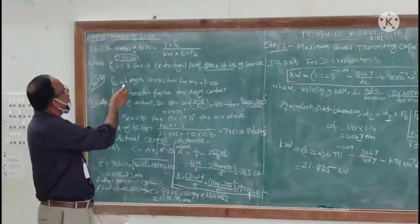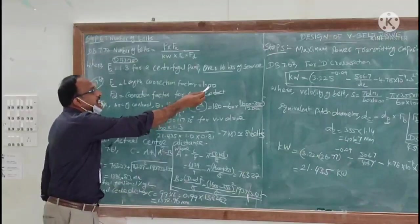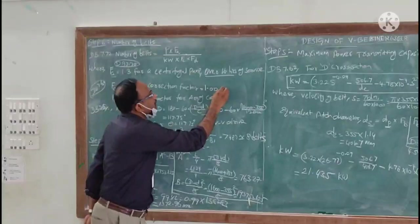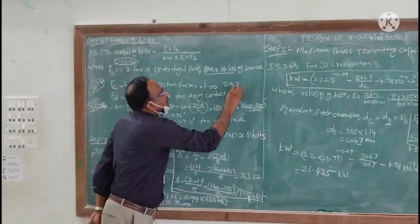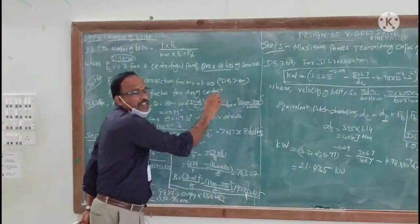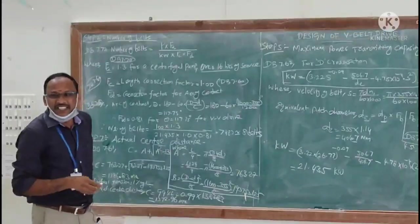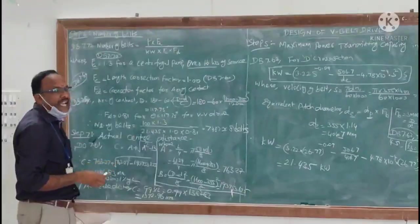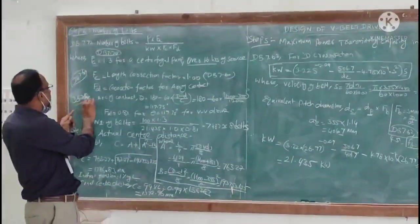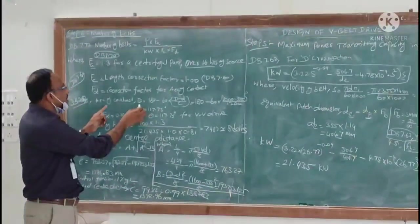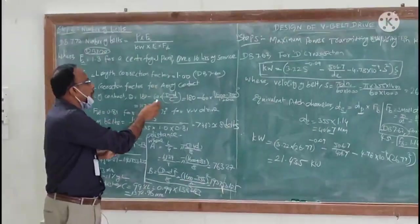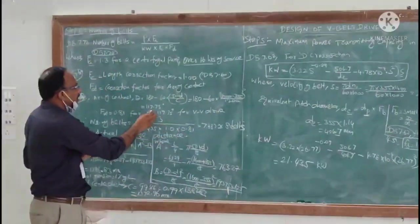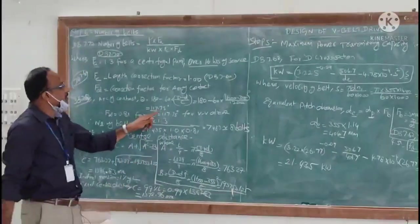Then F_c is nothing but length correction factor. This value is taken as 1 from the data book 7.60 for our selected T section belt. And Fd is correction factor for arc of contact. We know the formula from data book 7.68: theta equals 180 minus 60 times (d minus D) by C. Substitute the values, we will get the theta value as 117.75.